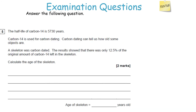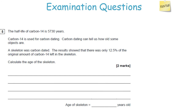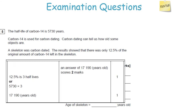The half-life of carbon-14 is 5,730 years. A skeleton has only 12.5% of its original carbon-14 remaining — calculate the age. Start at 100% and keep halving: 100 to 50, 50 to 25, 25 to 12.5. That took three halvings, so there have been three half-lives. Each half-life is 5,730 years, so the age is 3 times 5,730, which equals 17,190 years.